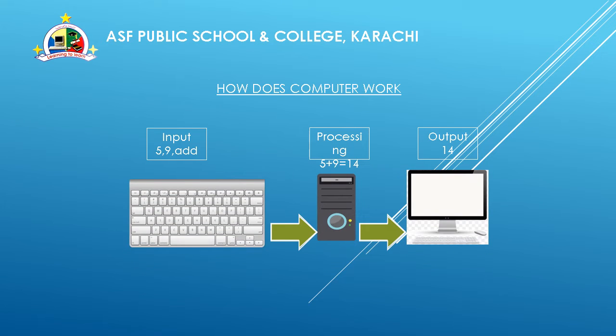So, you learned that machines perform their functions in three steps. These are: input, processing, and output. These are the three processes that the machine performs. First process is input, second process is processing, and the third step is output.